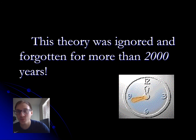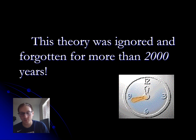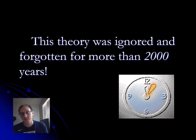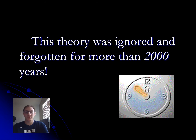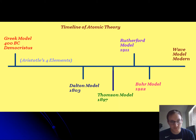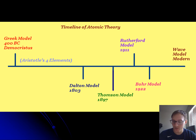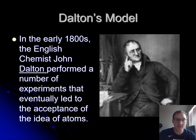During those 2,000 years, Aristotle was the dominant philosopher, and people accepted his theory that there were four elements — earth, wind, fire, and water — that made up all matter. Looking at a timeline of atomic theory, the Greek model of Democritus was followed by Aristotle's four elements all the way until Dalton's model in 1803.